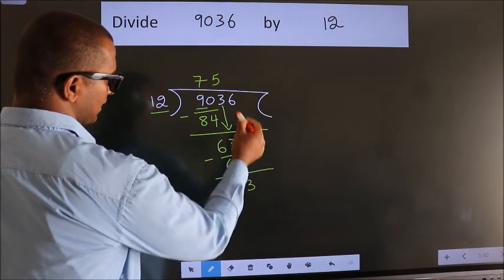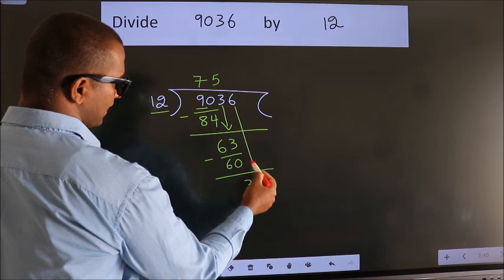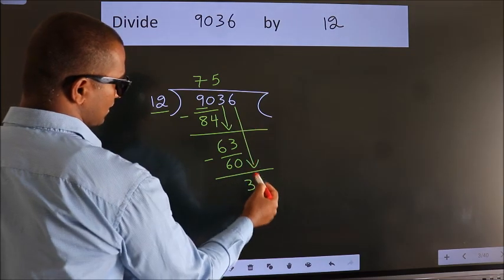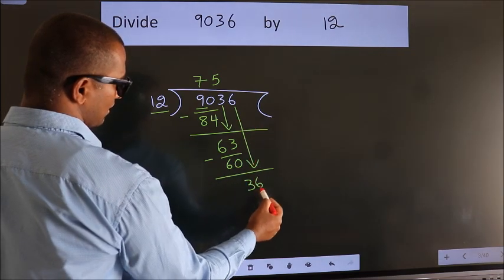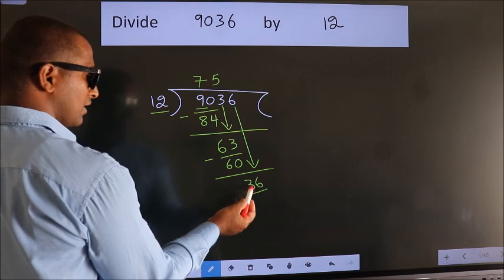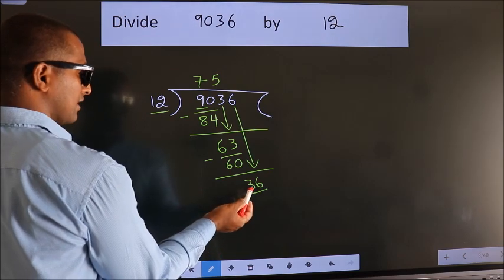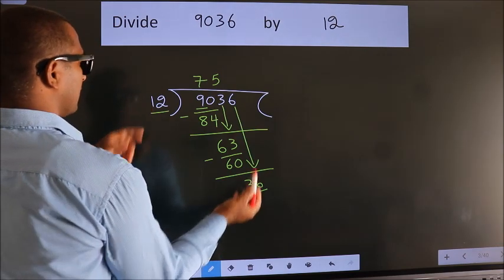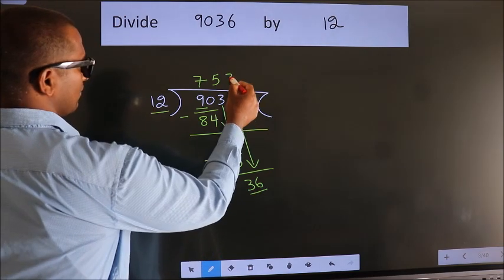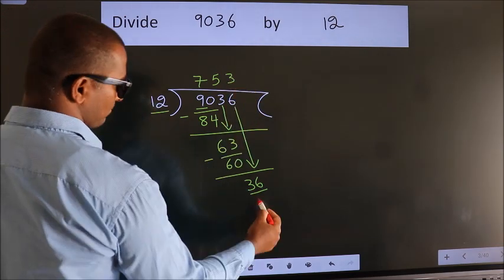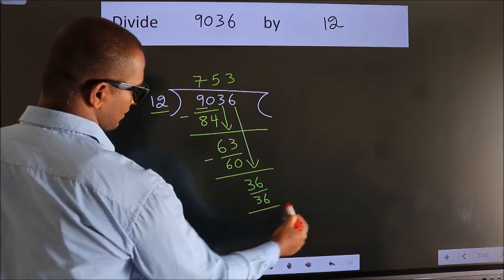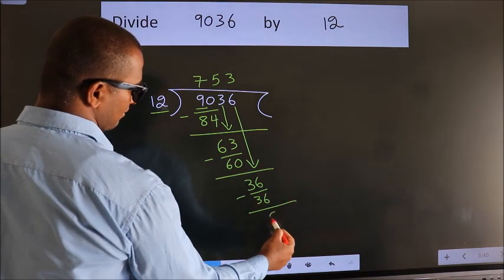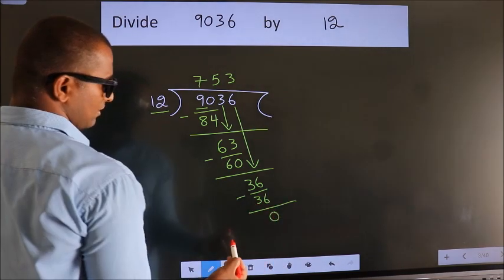After this, bring down the beside number — 6 down, so we have 36. When do we get 36 in the 12 times table? 12 threes, 36. Now we subtract. We get 0.